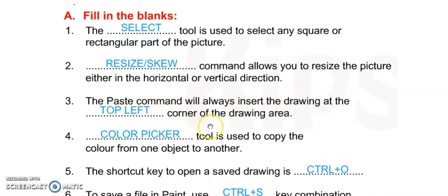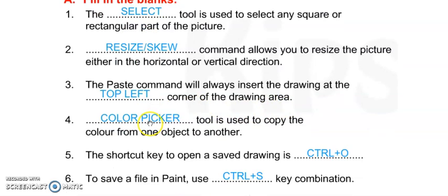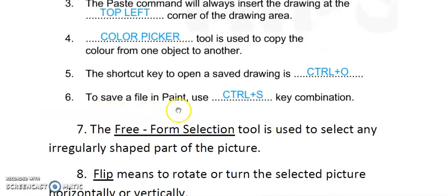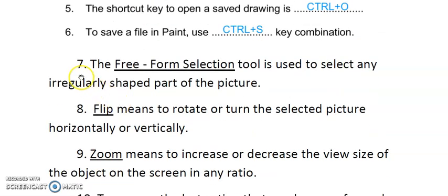Number four: COLOR PICKER tool is used to copy the color from one object to another. Number five: The shortcut key to open a saved drawing is CTRL+O. Number six: To save a file in Paint, use CTRL+S key combination.